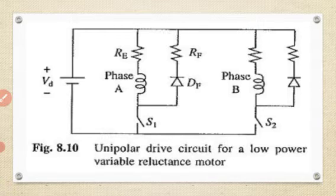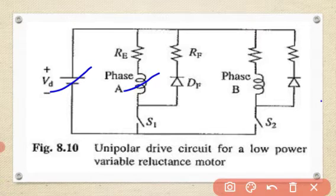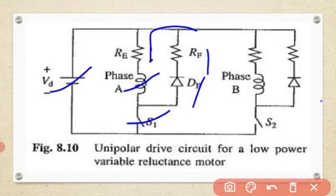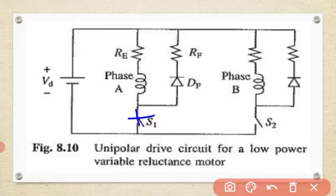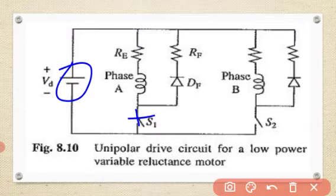The circuit elements are: input voltage VD applied to phase Ea, one switch S1, a freewheeling diode Df, and resistances RF and RE. When switch S1 is closed, phase Ea winding is connected to the DC source supply voltage VD, and the phase current builds up.